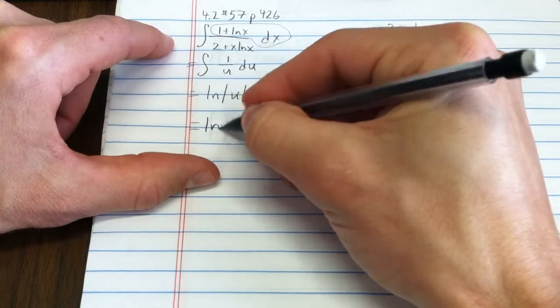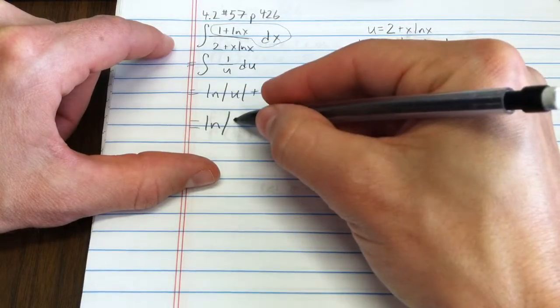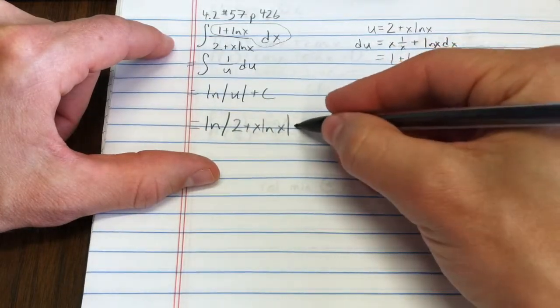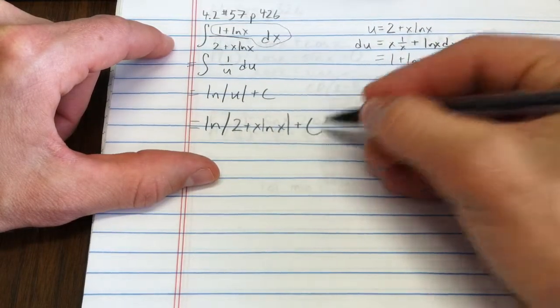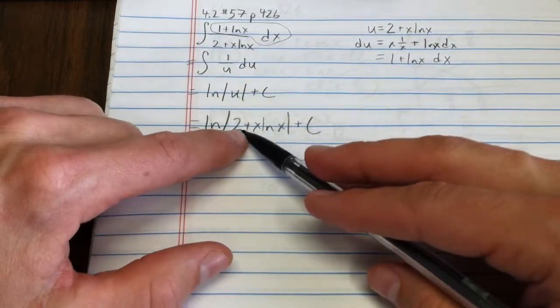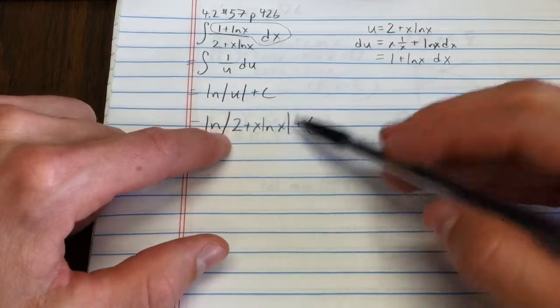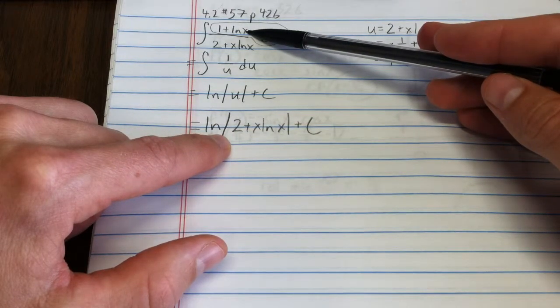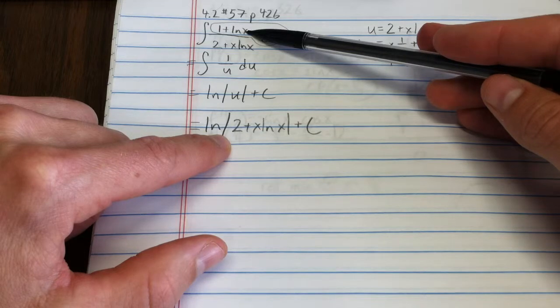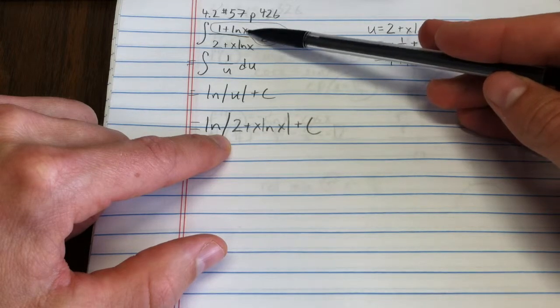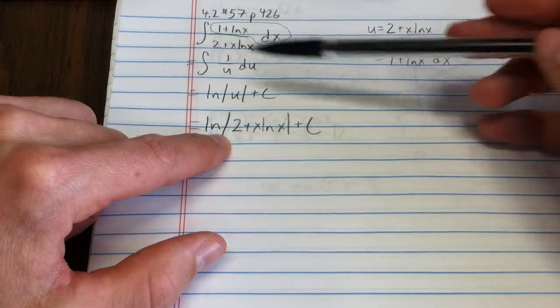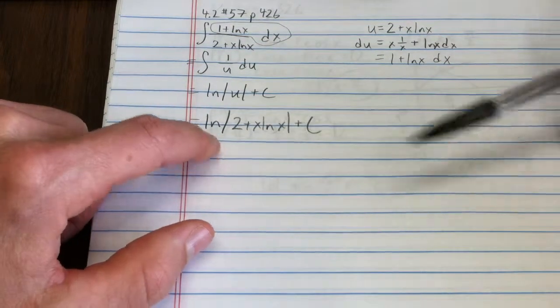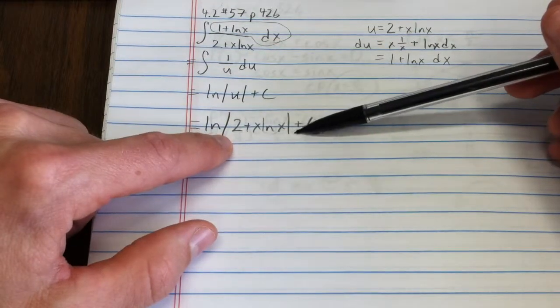Or if I sub back in, natural log of the absolute value of 2 plus x natural log of x plus c. I suppose that you don't really need the absolute value sign, since the natural log can't intake values less than 0. I take that back. We'll leave them in there, because this could have a fairly large negative output. But in general, it doesn't hurt to have them in there.